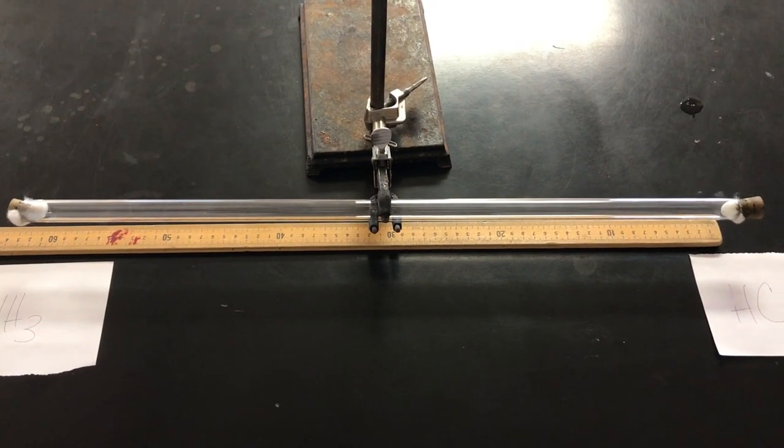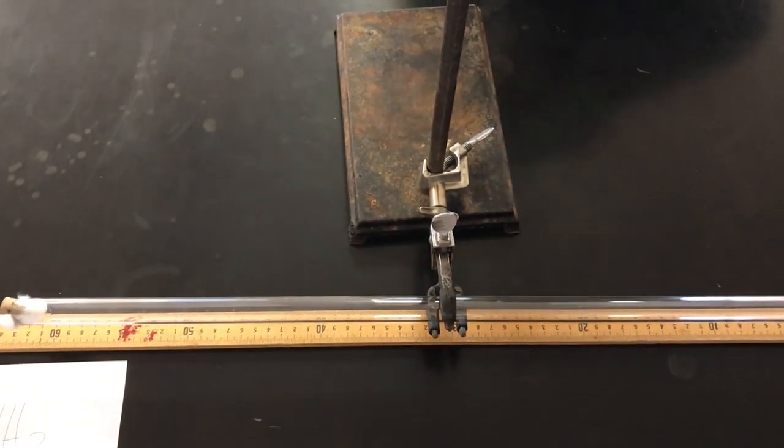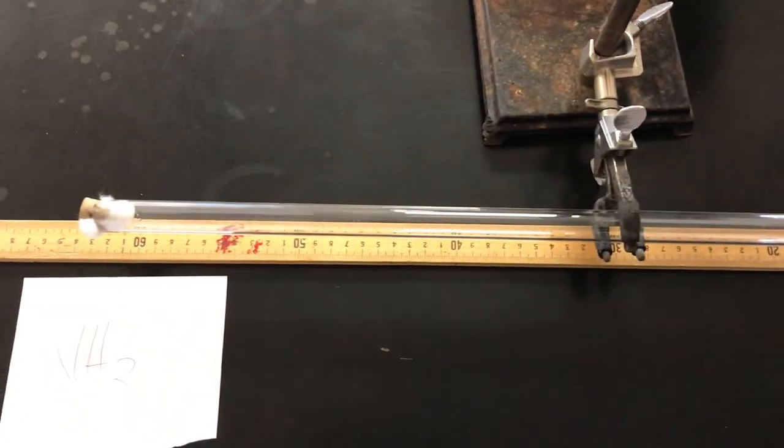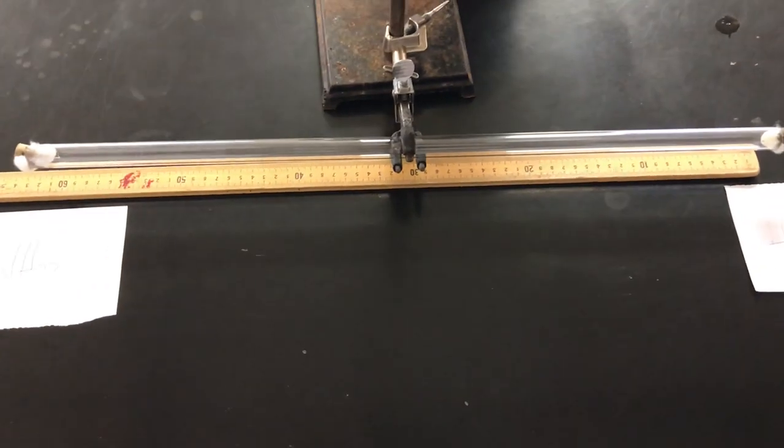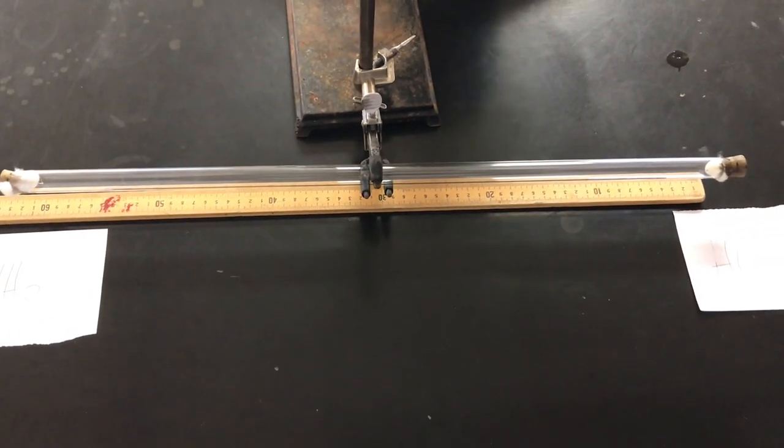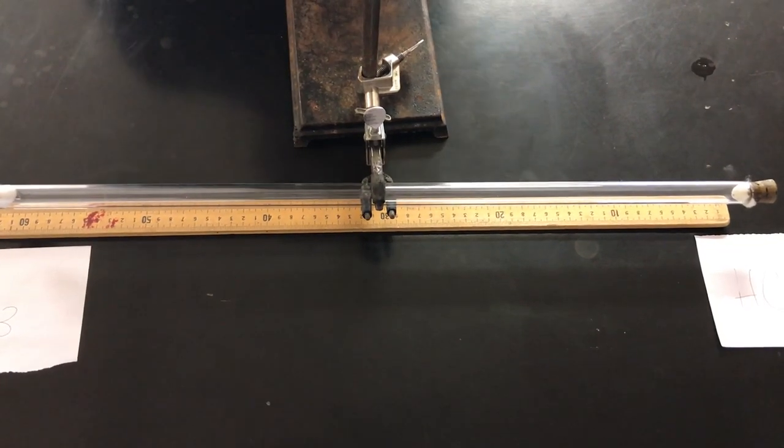Will these two gases meet in the middle? Will they meet right here where the clamp is? Are they going to meet over closer to the ammonia? Or the HCl? What does that depend on? Depends on how heavy the two gases are. The particles of the gases.